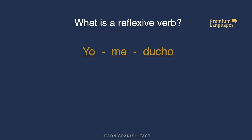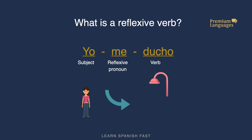So what we have here is a subject, 'yo', then we have a reflexive pronoun, 'me' — myself — and then the action, 'ducho' — shower. I shower the subject, so I shower myself. 'Yo me ducho.' As opposed to, for example, 'I shower the dog' — the dog would be different from the subject, so that would not be reflexive. 'Yo me ducho' because I shower myself — it is reflexive.